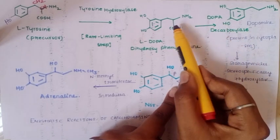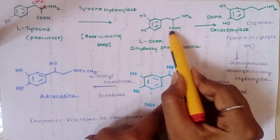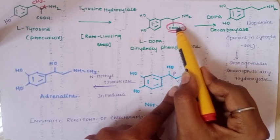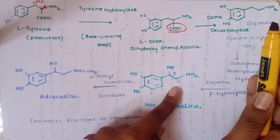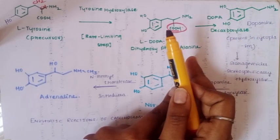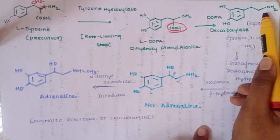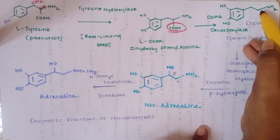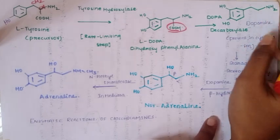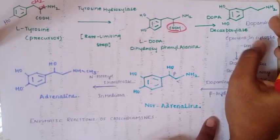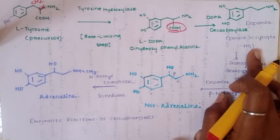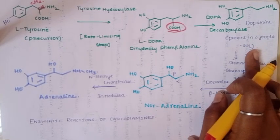Next, dopa decarboxylase converts L-DOPA to dopamine. The enzyme is called decarboxylase because it removes the carboxyl group. When the carboxyl group is removed, dopamine is formed. This is the first catecholamine formed in the pathway. Dopamine is present in the cytoplasm.